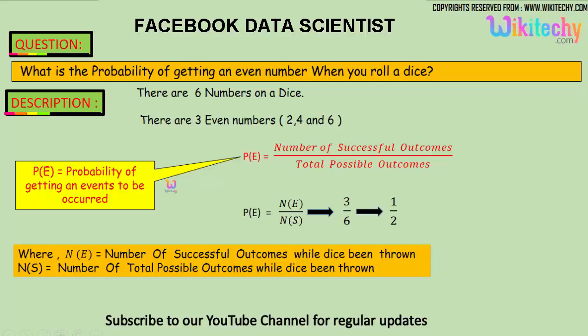Here is the formula: probability of getting an event is the number of successful outcomes divided by the total possible outcomes. So three is the number of successful outcomes divided by the possible outcome, which is six.